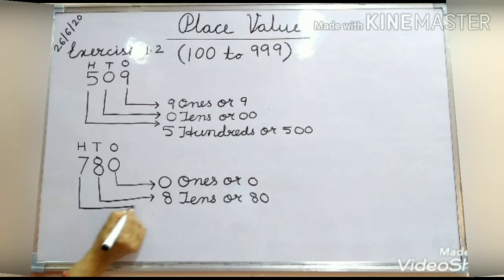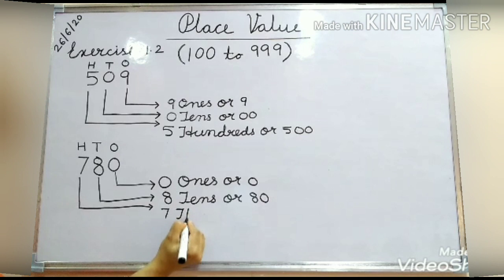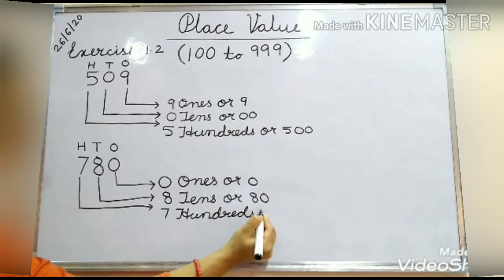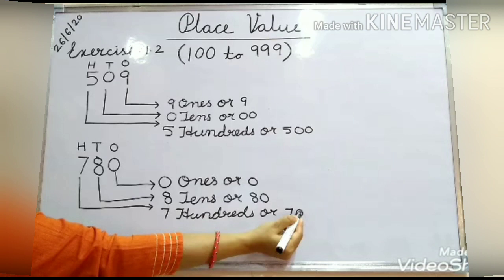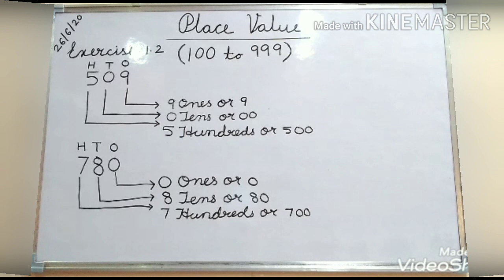And here, the place value of 7 is 7 hundreds. In number, 7 with 2 zeros — that is 700.